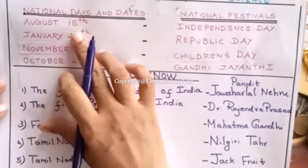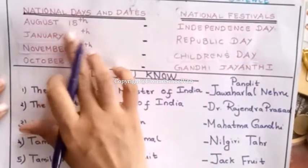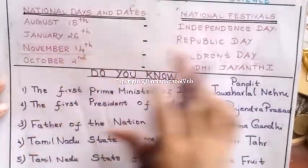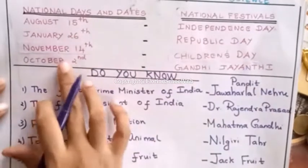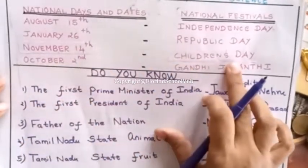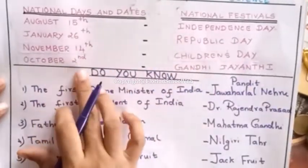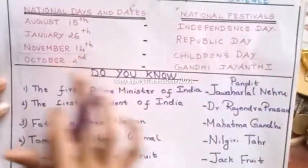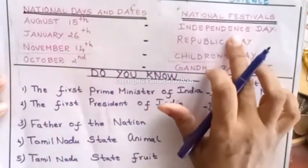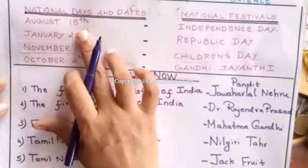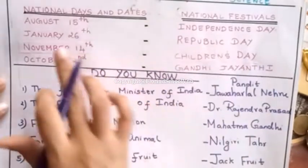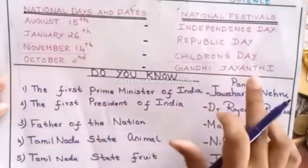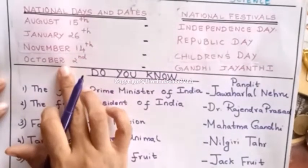National days and national festivals. The national festivals are celebrated. Independence Day is celebrated on August 15th. Republic Day on January 26th. Children's Day on November 14th. Gandhi Jayanti on October 2nd.